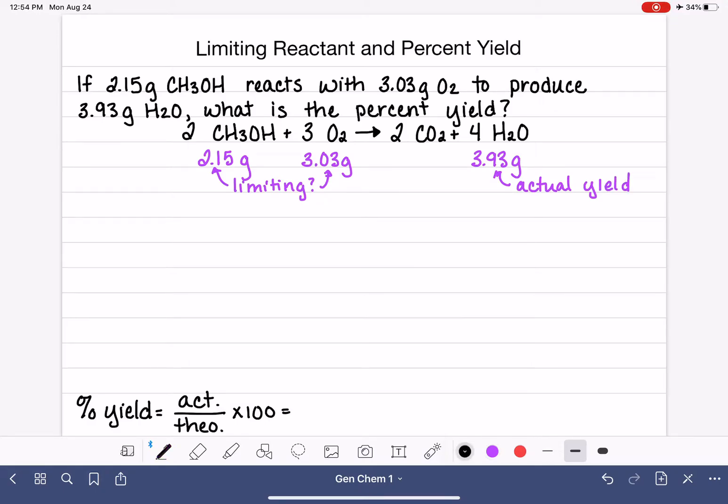Remember, I told you that the actual yield is a number that is measured in the lab after you perform the experiment, or if you're solving a problem on paper, the actual yield is the number that is provided to you in the problem. The actual yield can never be calculated. It has to either be measured or a number that's given to you.